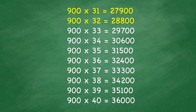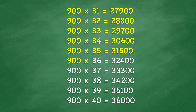900 times 33 equals 29,700. 900 times 35 equals 31,500. 900 times 36 equals 32,400. 900 times 37 equals 33,300. 900 times 38 equals 34,200. 900 times 39 equals 35,100.